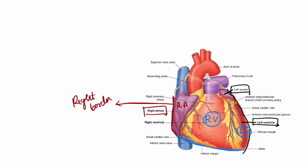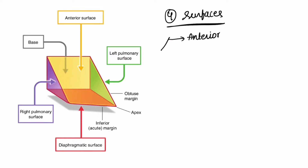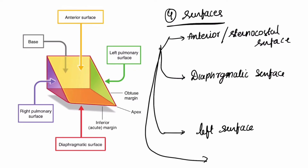Now let us look at the surfaces. We have four surfaces: the anterior surface, also known as the sternocostal surface; the diaphragmatic surface; the left surface; and the right surface.